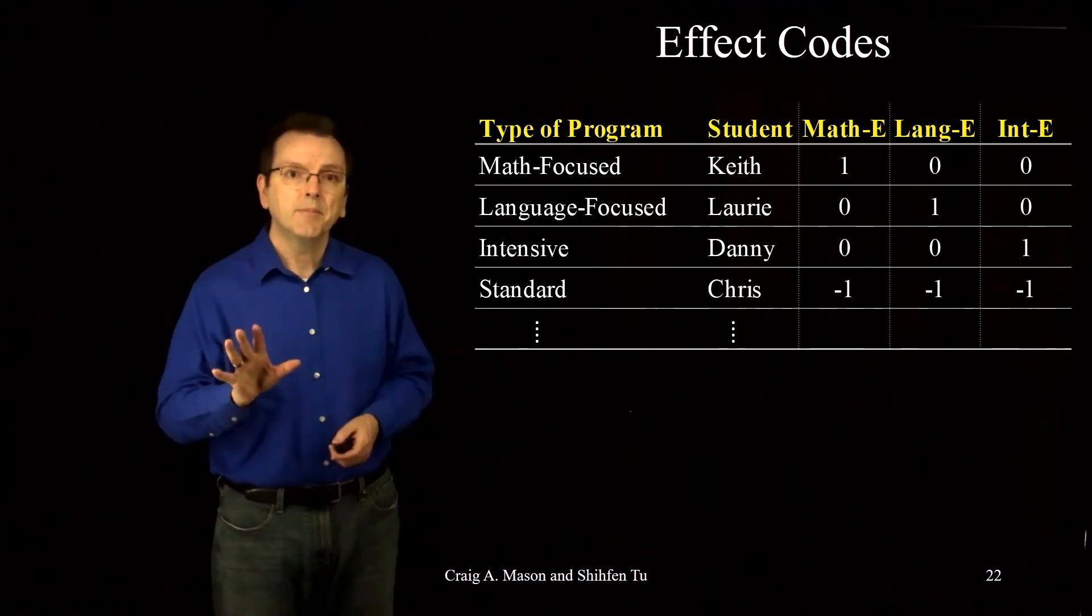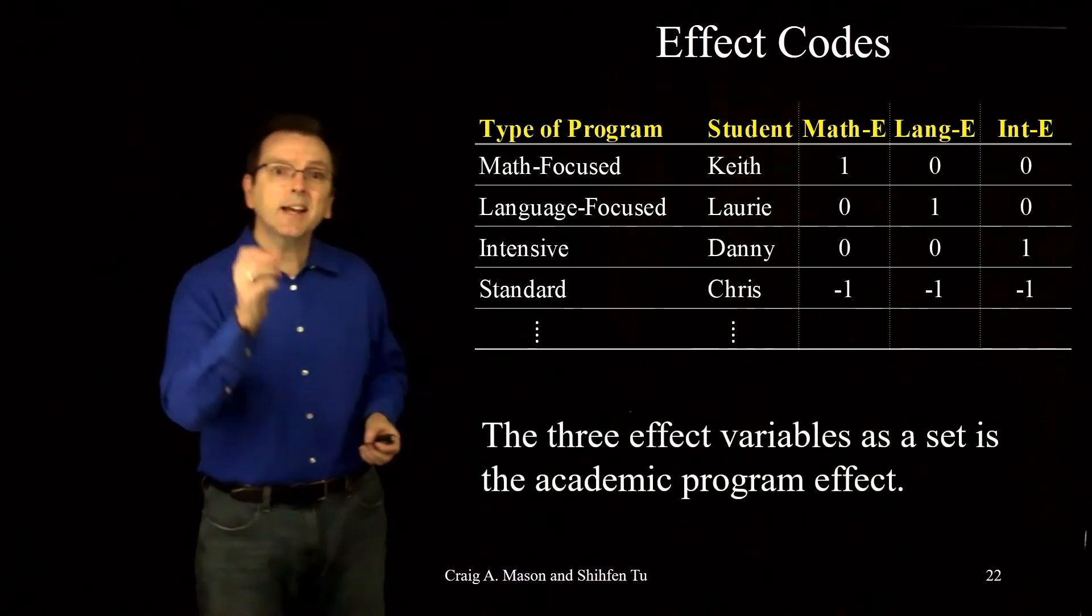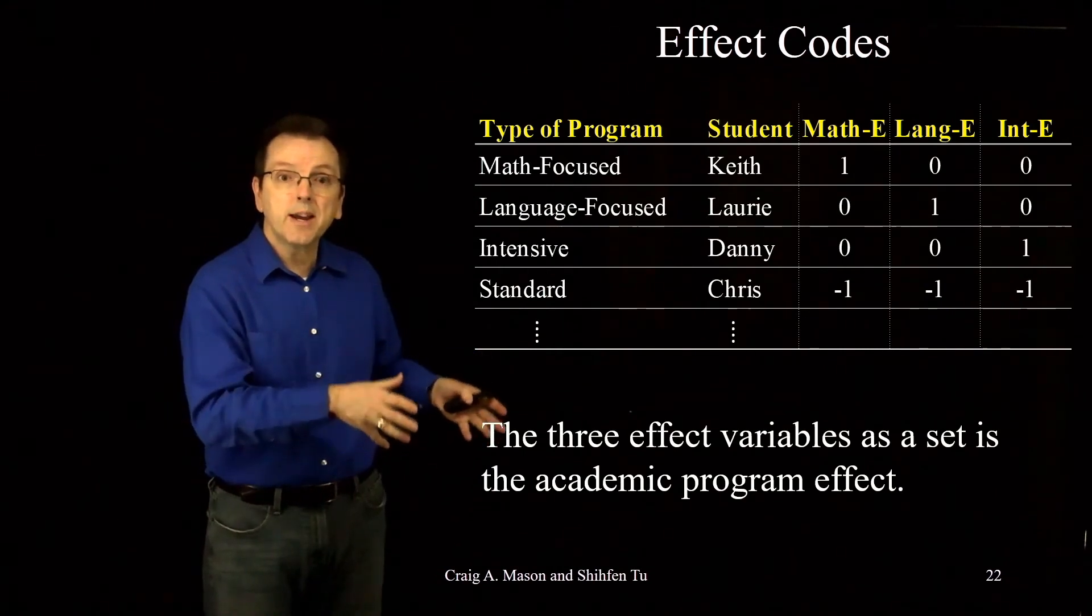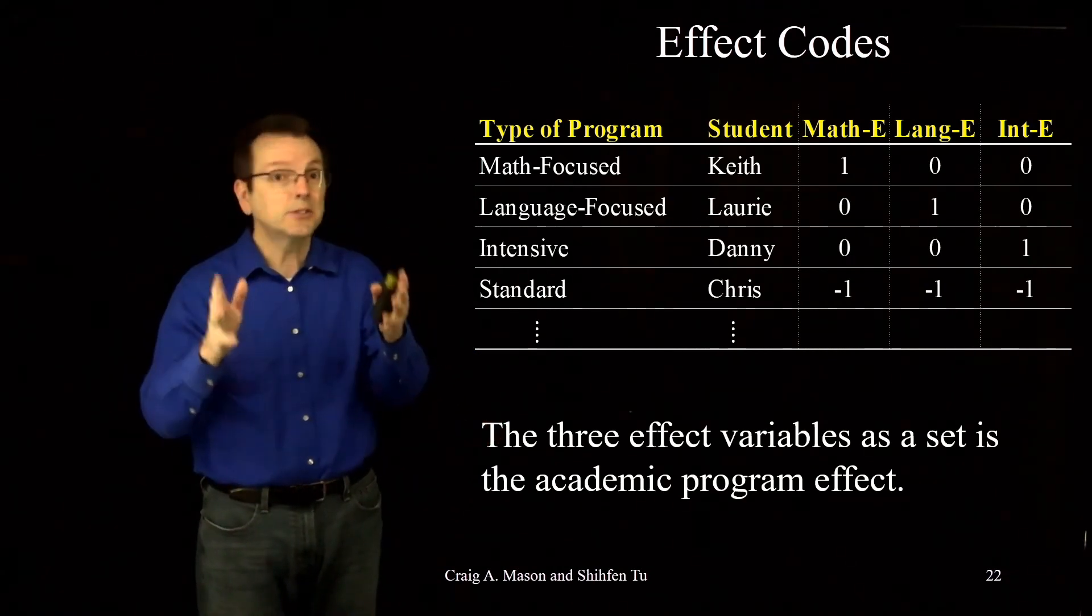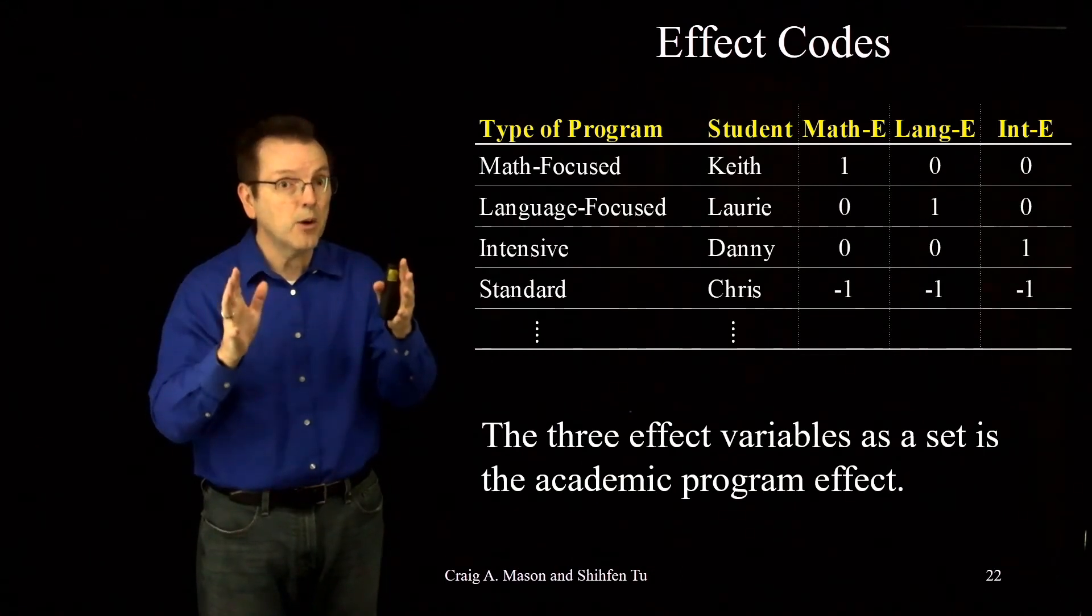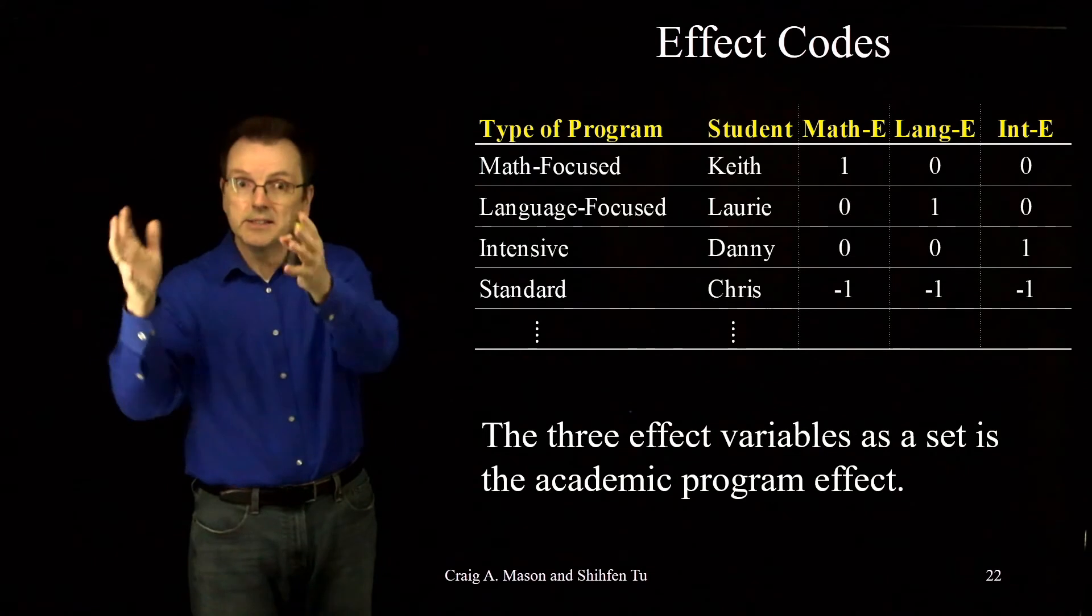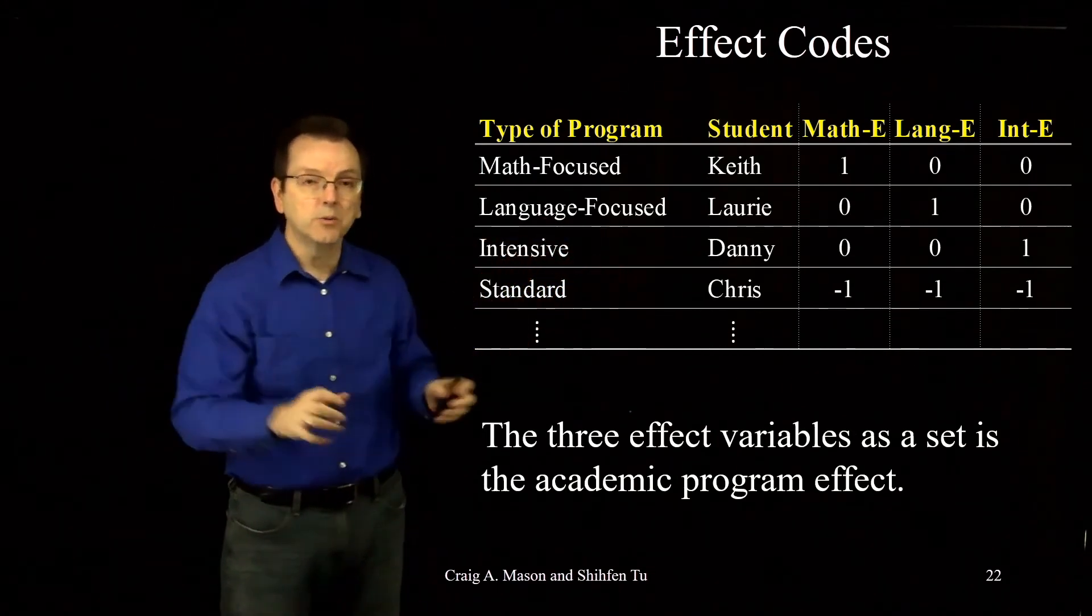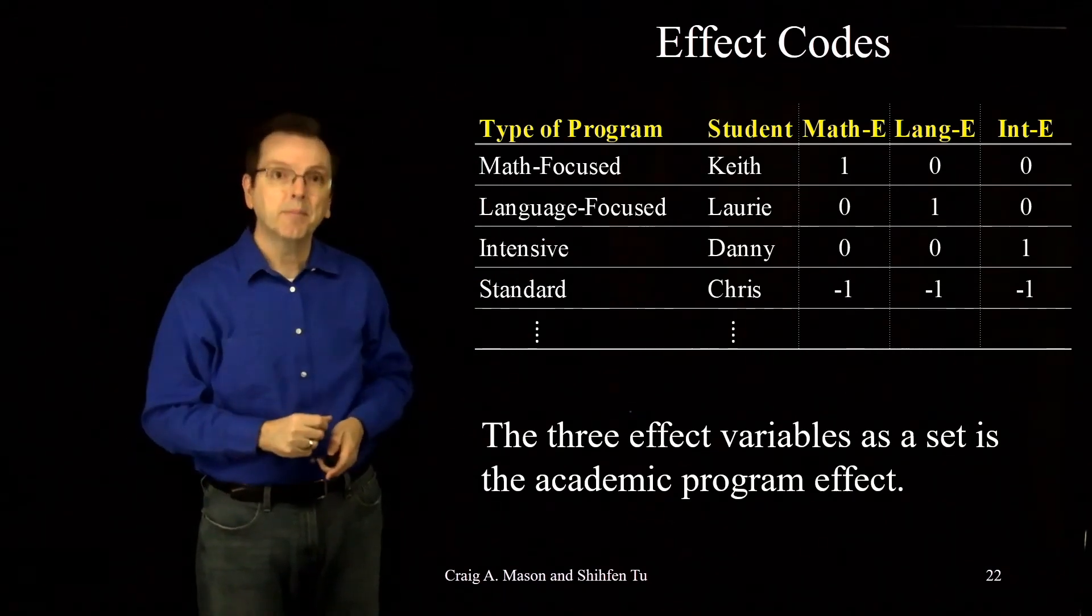Just like with dummy coding, academic program isn't a single variable. It's made up of the three effect coding variables as a set. That's also just like with dummy coding. Dummy coding, our three dummy codes, as a set, reflected academic program. Our three effect codes, as a set, reflect academic program.